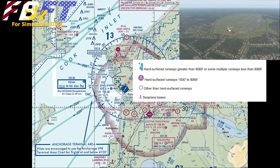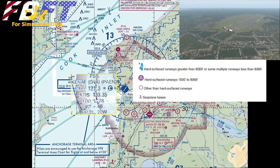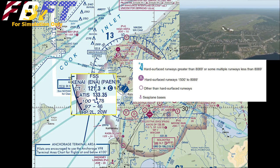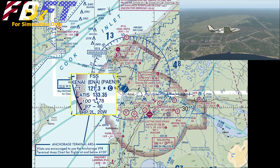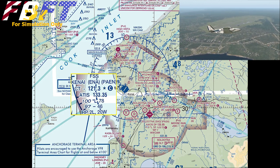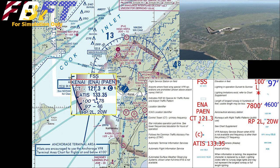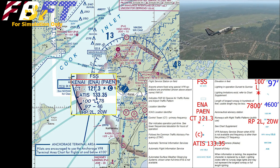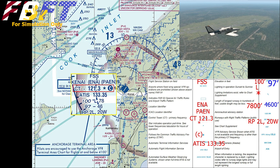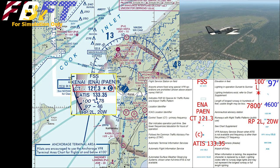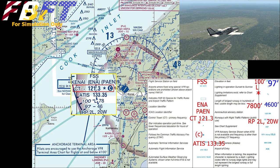Since Kenai is a larger airport, it's going to have more information crammed onto its label. FSS stands for flight service station, on field. The next line has all the airport identifiers — the name Kenai, and then the three and four-letter identifiers. The third line shows CT for control tower and its frequency, 121.3. There's a star indicating it operates part-time, so you need to look up the operational hours. The little C at the end is for CTAF being used there as well.